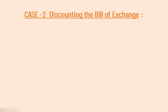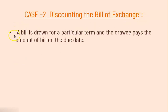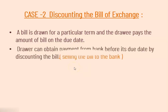Let us understand what is meant by the discounting of bill of exchange. A bill is drawn for a particular term and the drawee pays the amount of the bill on the due date. It means the bill is drawn by the drawer and as per the term, drawee is going to do the payment of the bill. Now the drawee can obtain payment from bank before the due date by discounting the bill.